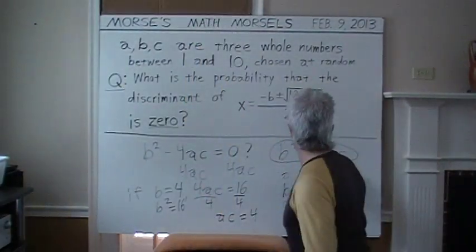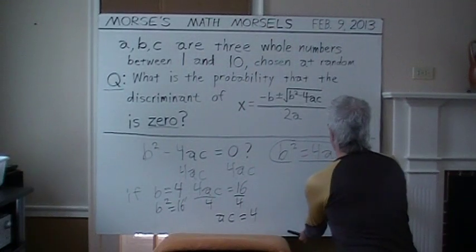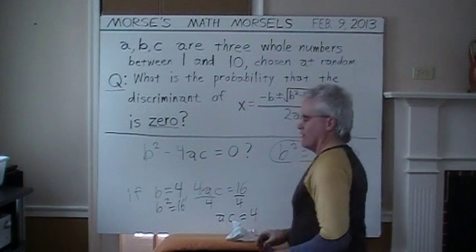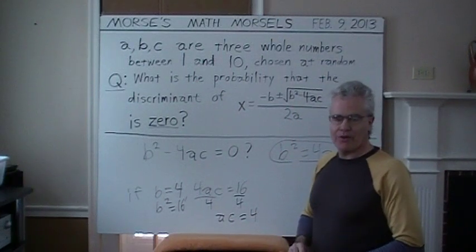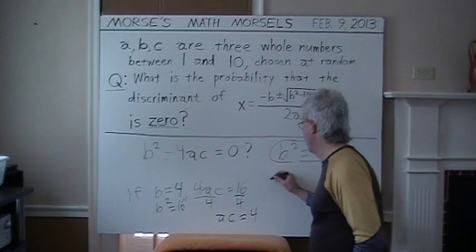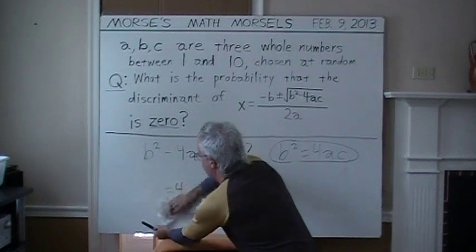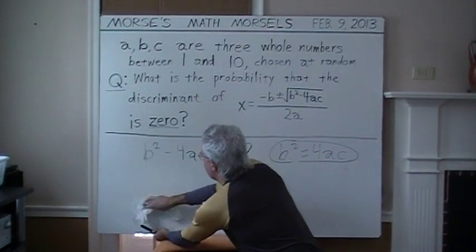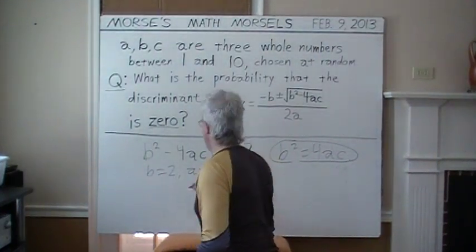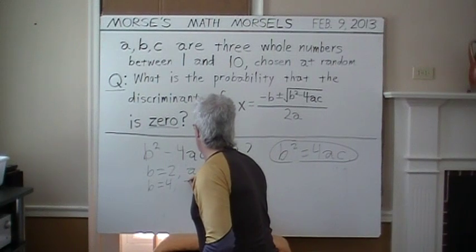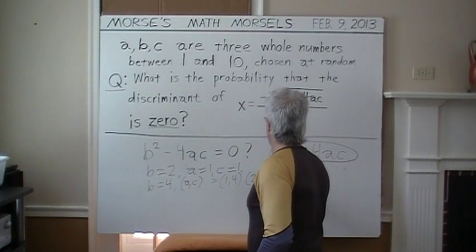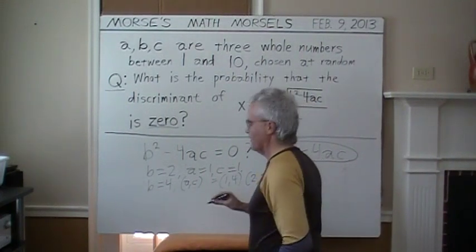We'll do a little erasing here since we won't need these any longer. Okay, so B can be 2. A and C are 1 only. If B is 4, A and C can be 1 and 4, or 2 and 2, or 4 and 1. I'm going to start listing those possibilities right now. Okay, we have B equals 2, A equals 1, C equals 1. And B equals 4. A, C can be 1 comma 4, or 2, 2, or 4, 1. Alright.